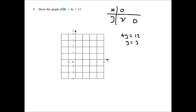Then, what I want to do is make the y value 0. If y is 0, then 4 lots of 0 is also 0. So I'm left with the equation 3x equals 12. If I solve that, that gives me x equals 4.